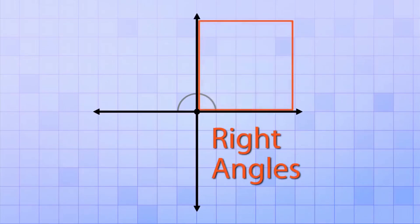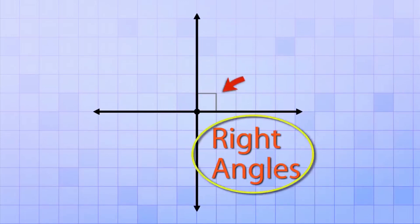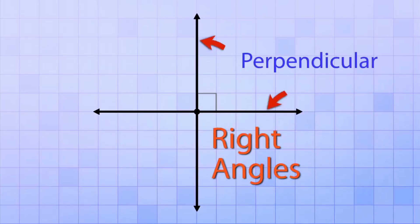We even have a special symbol to show if an angle is a right angle. Because they form a square corner, we use a little square instead of an arc like we use for other angles. So whenever you see this symbol, you know that the angle you're looking at is a right angle, and the lines that form it are perpendicular.